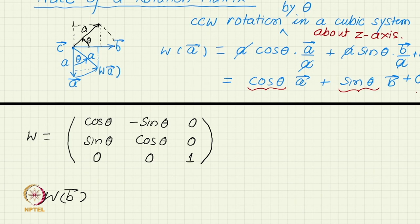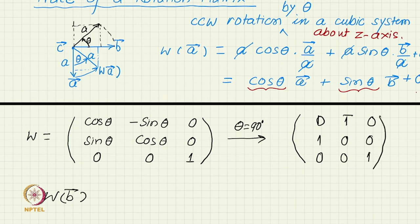We have generalized the problem from writing a 90 degree rotation about z axis, we have written a theta degree rotation about z axis. If we put theta equals 90 degree, we should be able to recover the original matrix. If you put theta equals 90 degree, then it becomes 0, 1, 0, minus 1, 0, 0, and 0, 0, 1, which is exactly the matrix we just found for 90 degree rotation.